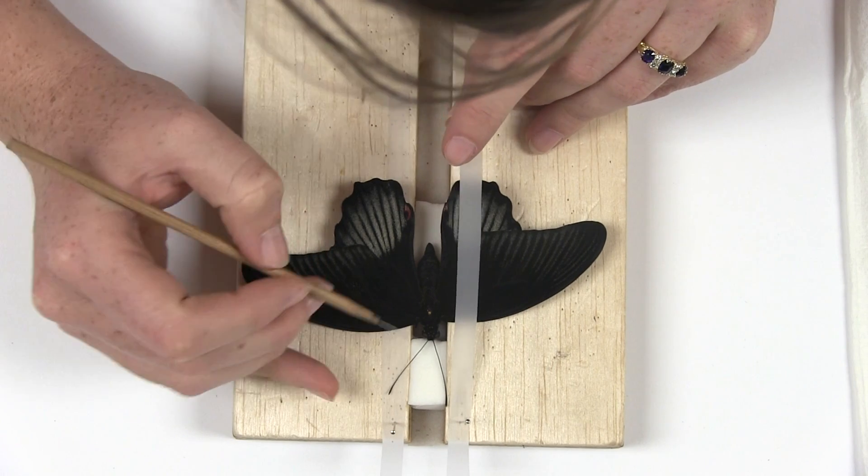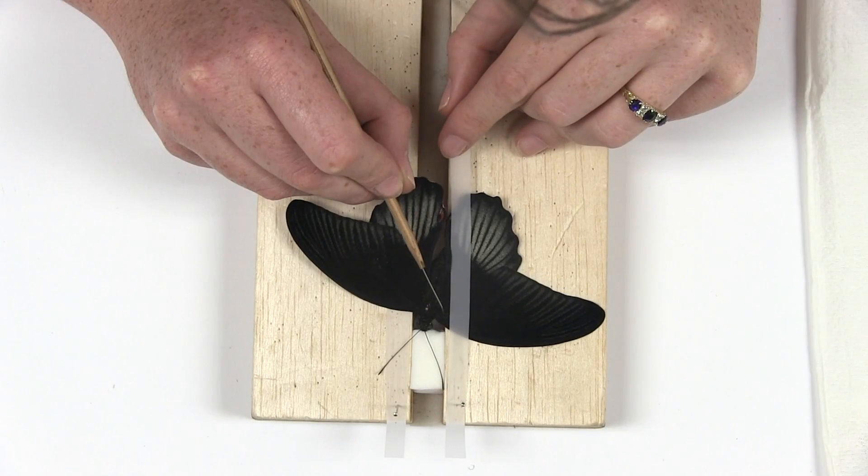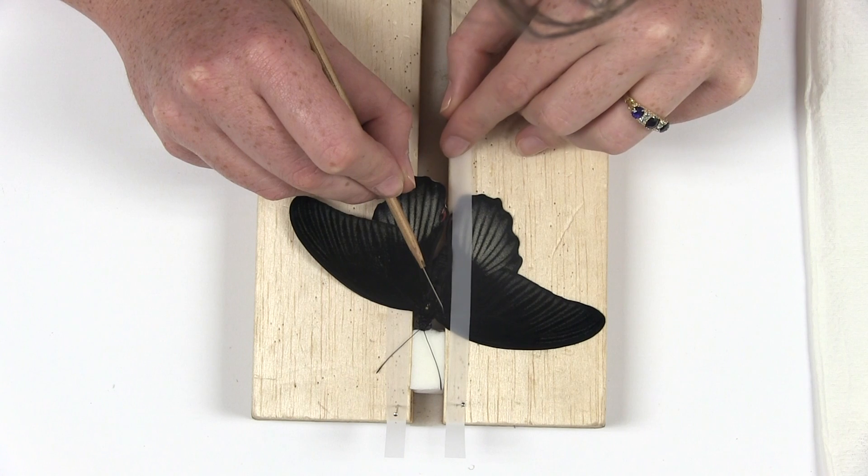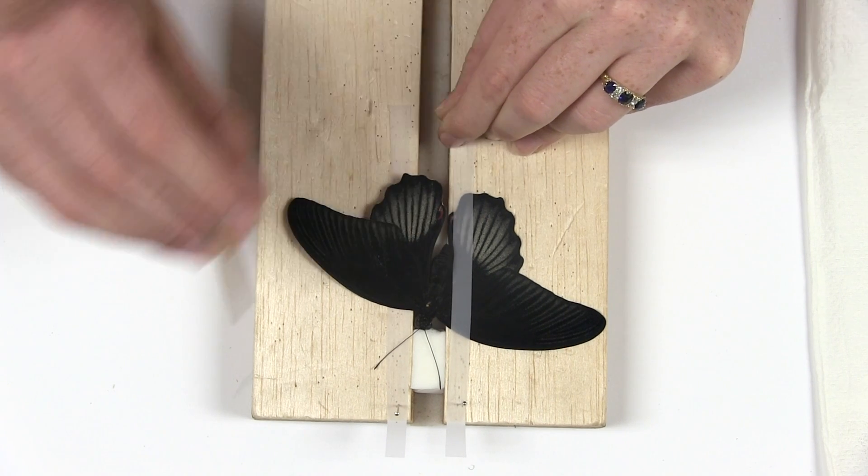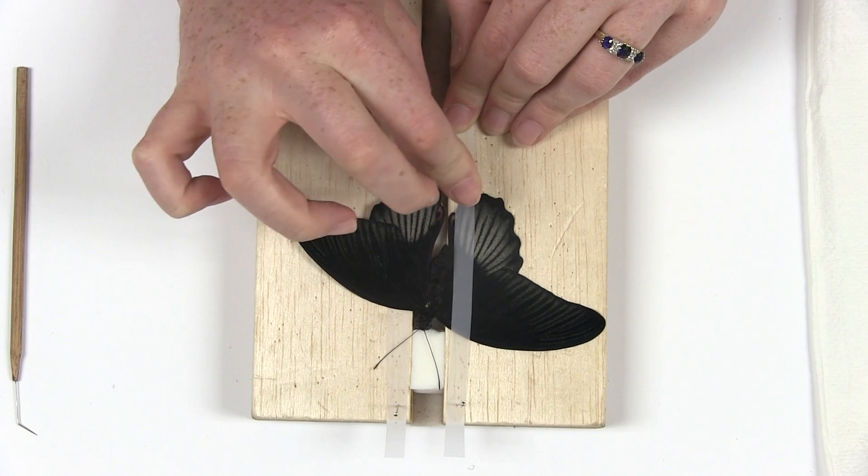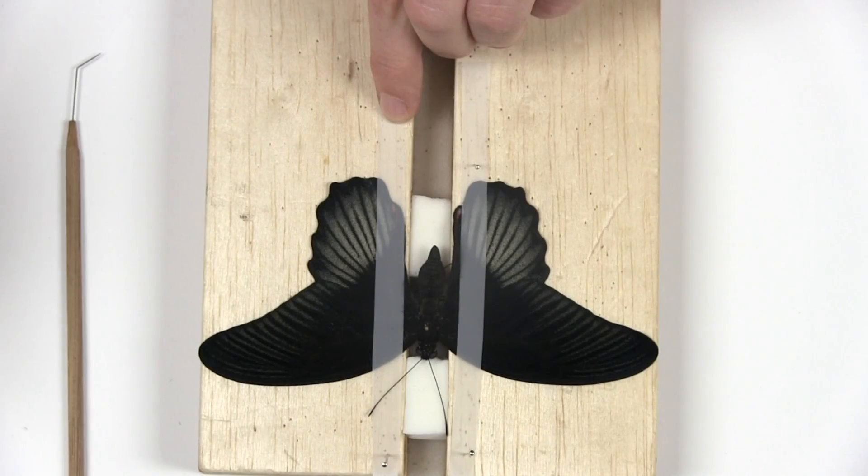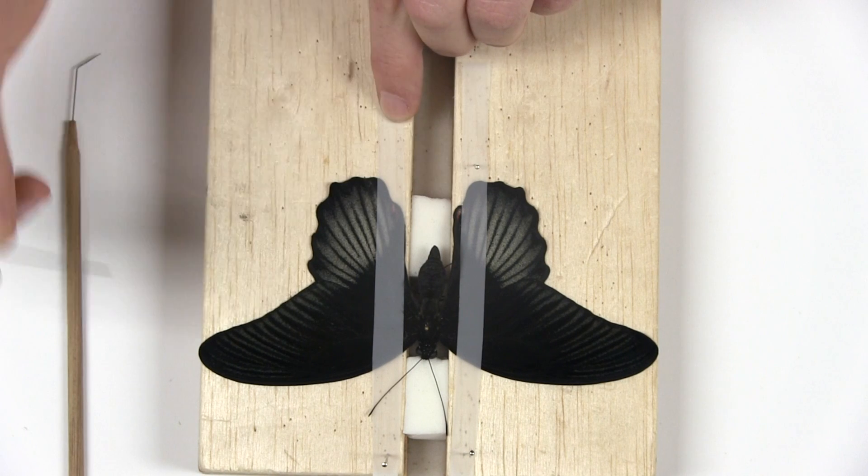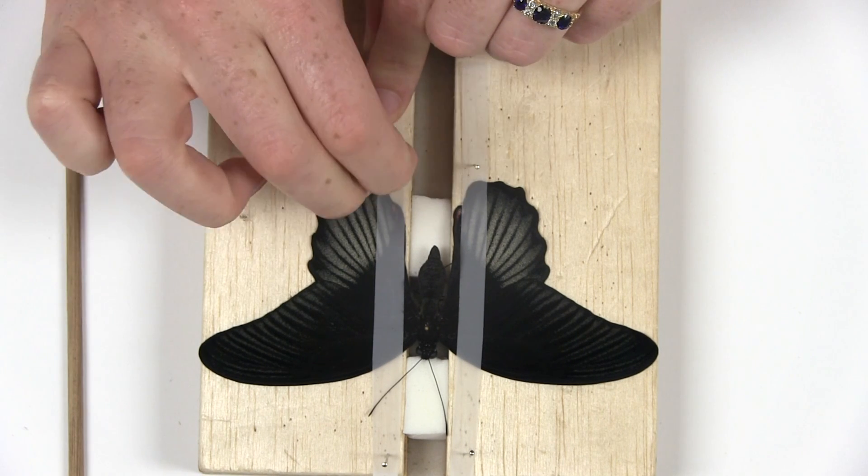Insert the point of the stick into a thick vein and carefully move the forewing into its spread position using the paper strips as leverage. Pull the strip tight so that the wings cannot move and pin the strip in place. Repeat for the other pair of wings. You can use a ruler or a stick to measure the symmetry of the wings.